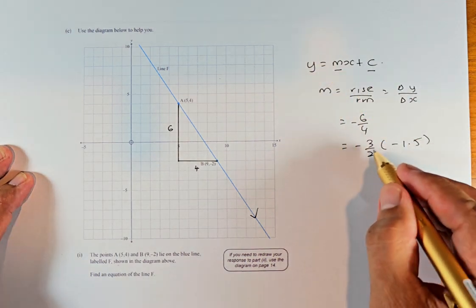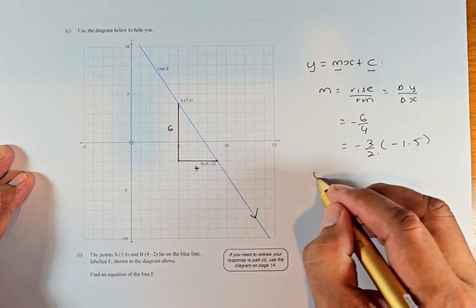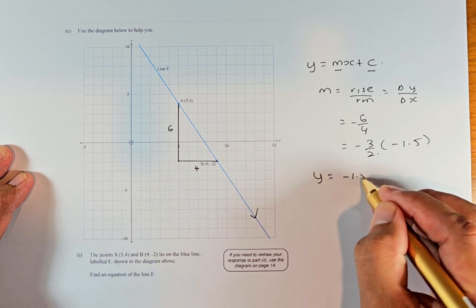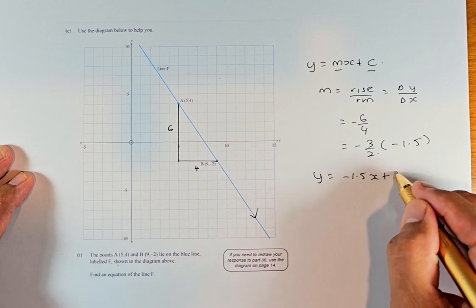So now the equation is, we place this M into that equation. Y equals minus 1.5X plus C.